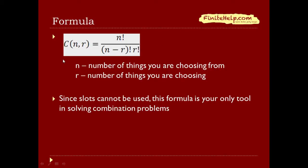You're going to be using the formula for combination. The formula looks pretty much just like the permutation one, with the addition of r factorial in the denominator. N is the number of things you're choosing from, and r is the number of things you're choosing. Since slots cannot be used, this formula is your only tool in solving combination problems.